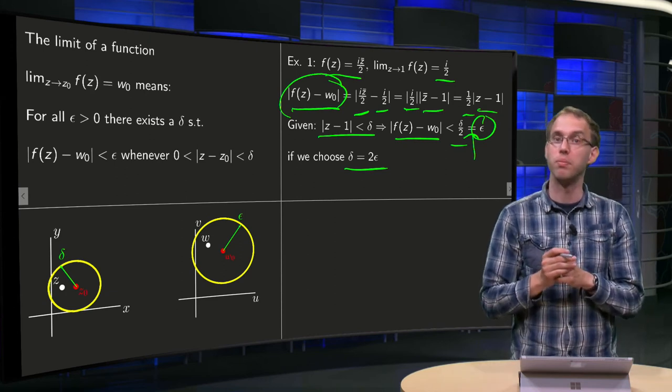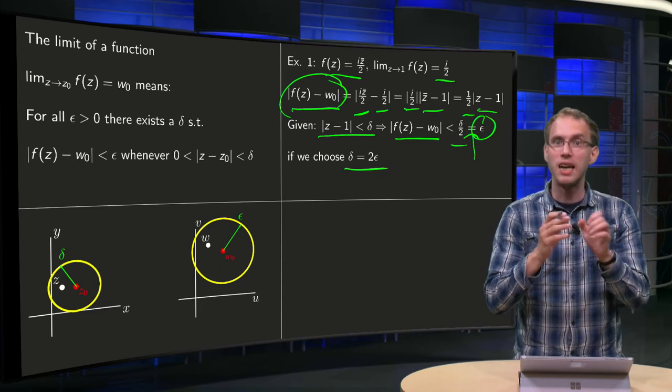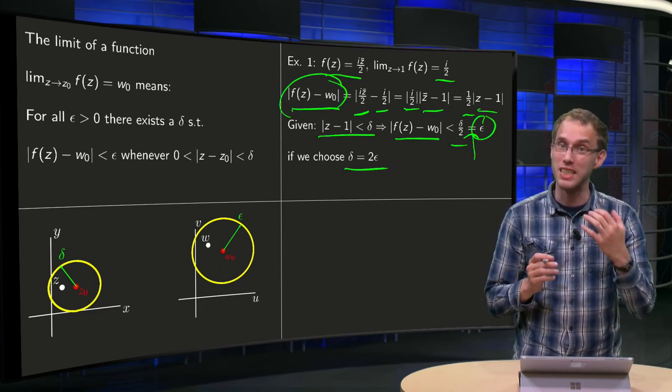Well, you can do this for any ε > 0, which means that this limit equals i/2. That's how such an argument works if you want to show that the limit exists.